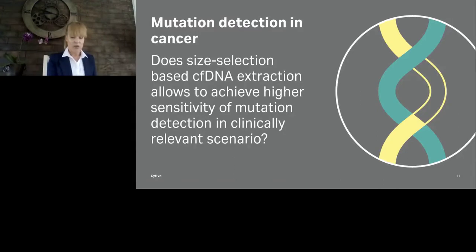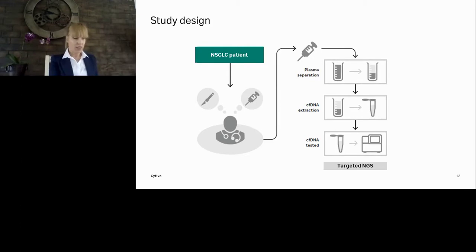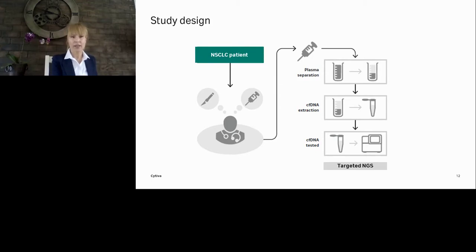We were very encouraged by those results. But the main question we asked is whether those key performance characteristics allow achieving higher sensitivity of mutation detection in a clinically relevant scenario. To answer the question, we designed a small study involving four patients all diagnosed with advanced stage lung cancer. They donated blood, the blood was processed and plasma extracted, and the plasma was subjected to library preparation. Tumor profiling was done using targeted NGS.